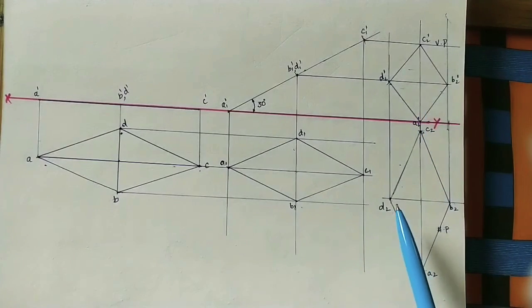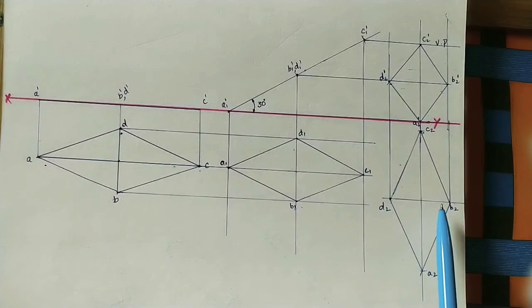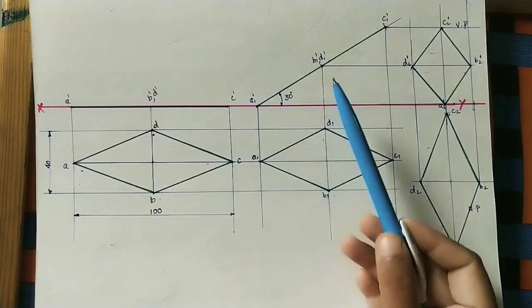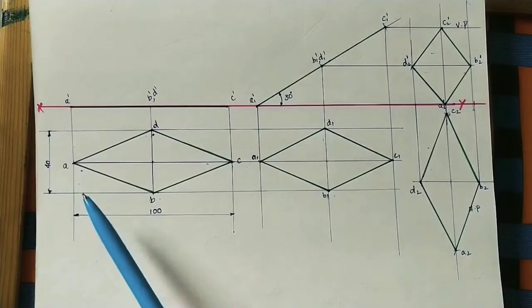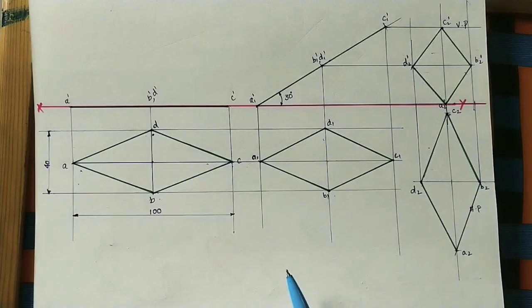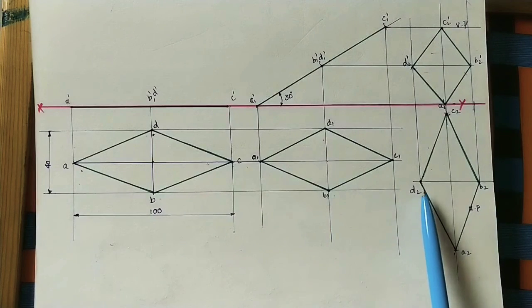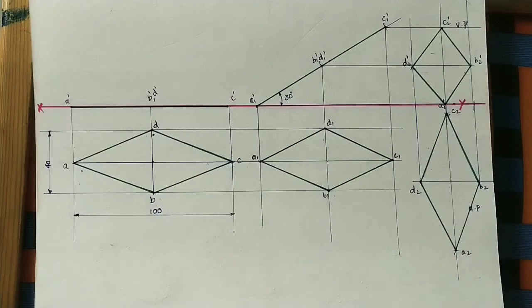This is the final front view and final top view. Observe that the smaller diagonal appears as a parallel line in both views, confirming it is parallel to both the vertical plane and horizontal plane. Always ensure front view and top view lines are darker than projector lines. Mark the given dimensions: smaller diagonal 40 mm, longer diagonal 100 mm, and mark the 30-degree angle. This is the final solution.